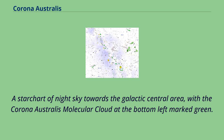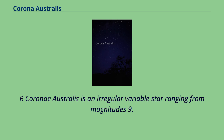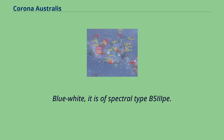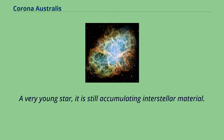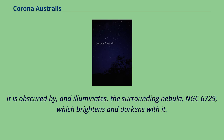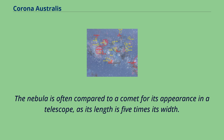R Corona Australis is an irregular variable star ranging from magnitudes 9.7 to 13.9. Blue-white, it is of spectral type B5-IIIpe. A very young star, it is still accumulating interstellar material. It is obscured by, and illuminates, the surrounding nebula NGC 6729, which brightens and darkens with it. The nebula is often compared to a comet for its appearance in a telescope, as its length is five times its width.